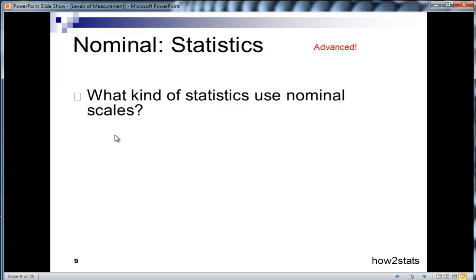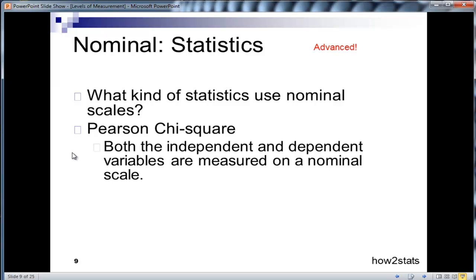So what kind of statistics use nominal scales? Well, here's one. It's called Pearson Chi-Square. Both the independent and dependent variables are measured on a nominal scale when we perform a Pearson Chi-Square analysis.